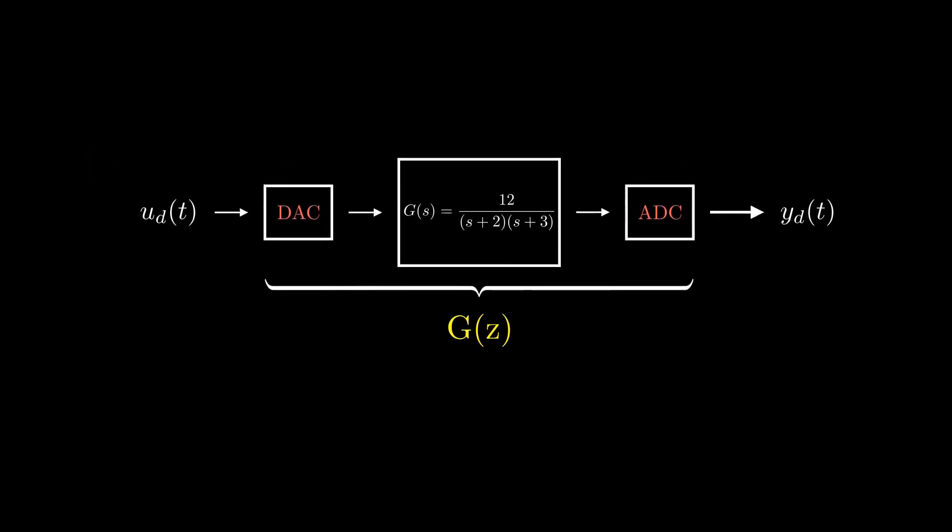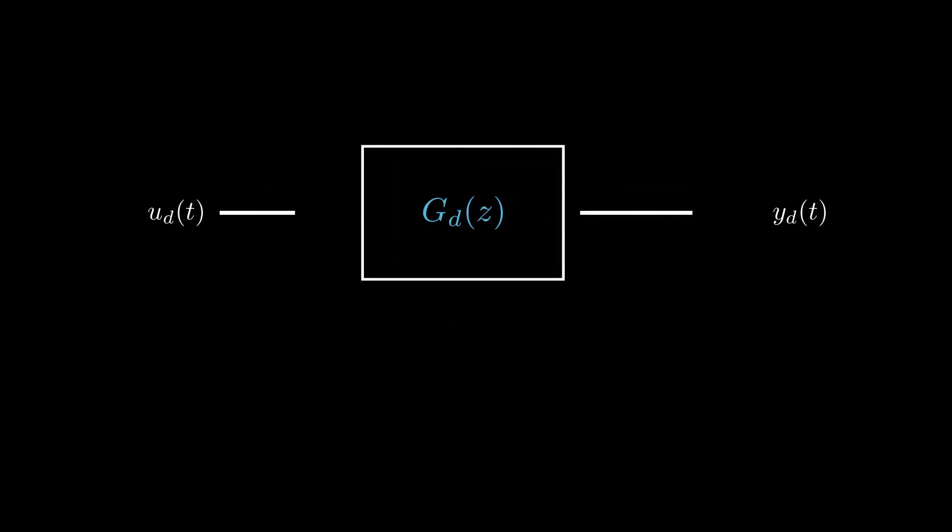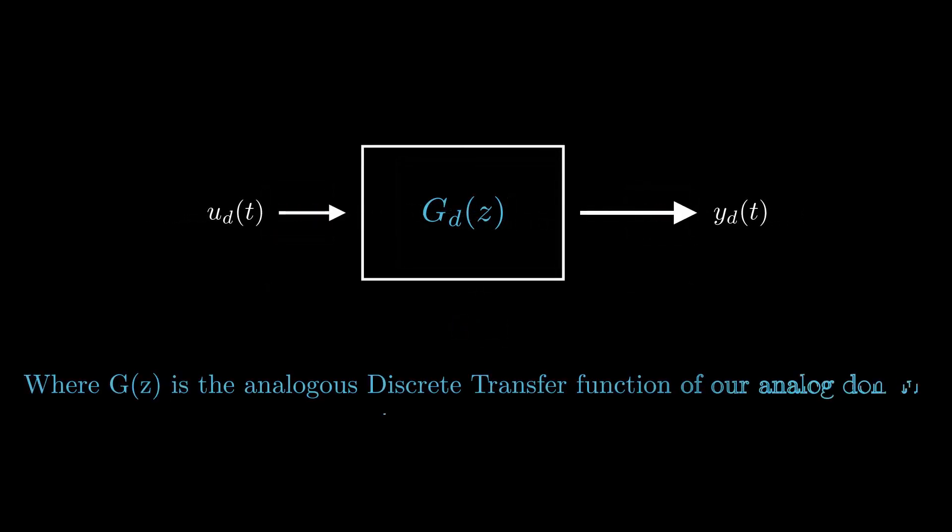Now we can unify the representations of DAC, G(s) and ADC into single G(z). And this serves as the analogous discrete system for the analog plant, allowing us to model and analyze the entire system in discrete domain.